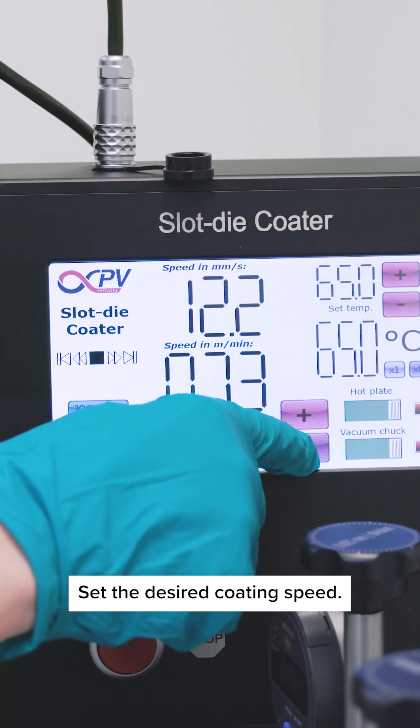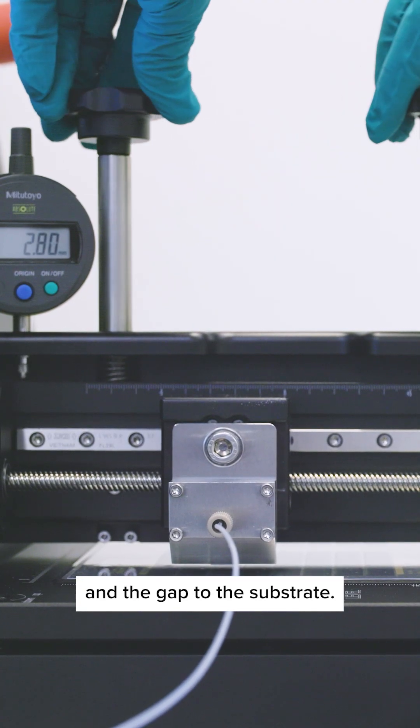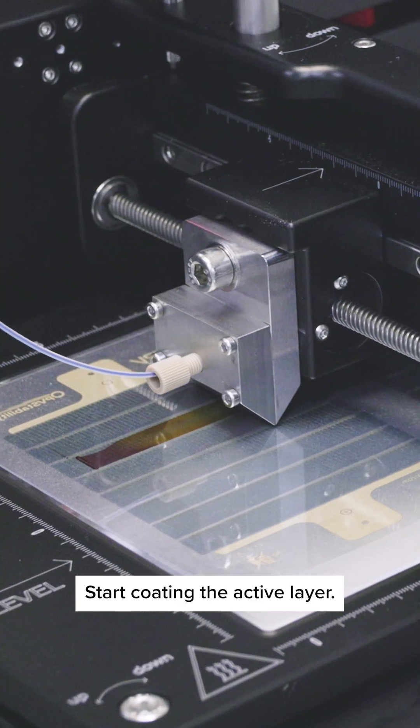Set the desired coating speed. Adjust the cross web position of the slot die head and the gap to the substrate. Set the ink flow, start the pump, and start coating the active layer.